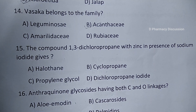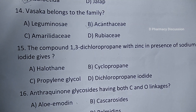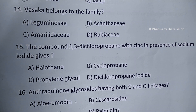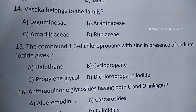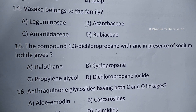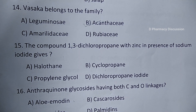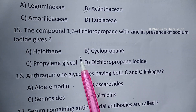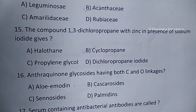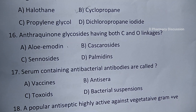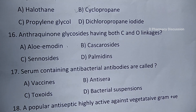Question number 15: the compound 1,3-dichloropropane with zinc in presence of sodium iodide gives — options are A. Halothane, B. Cyclopropane, C. Propylene glycol, and option D. Dichloropropane iodide. Correct answer is option B, that is Cyclopropane.